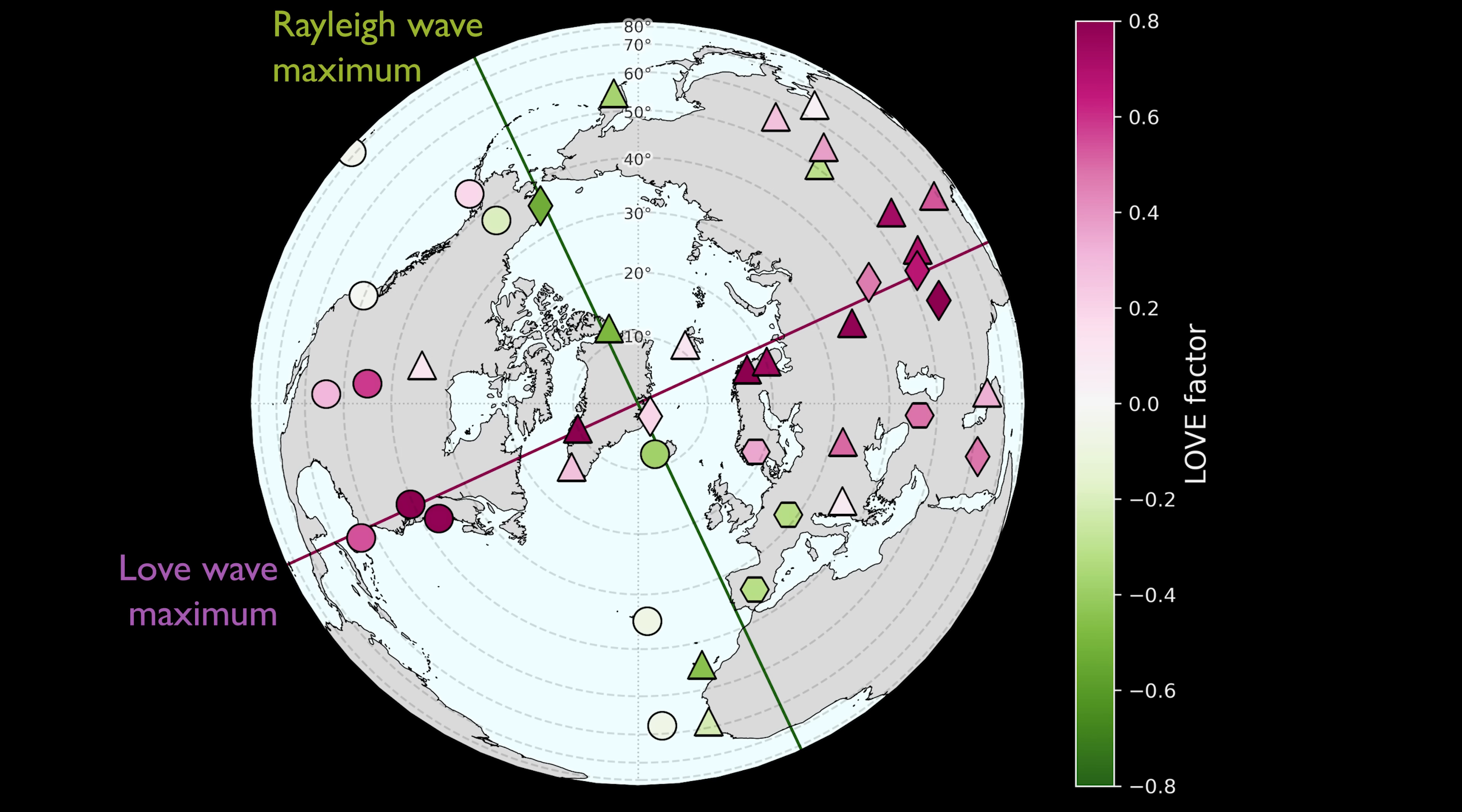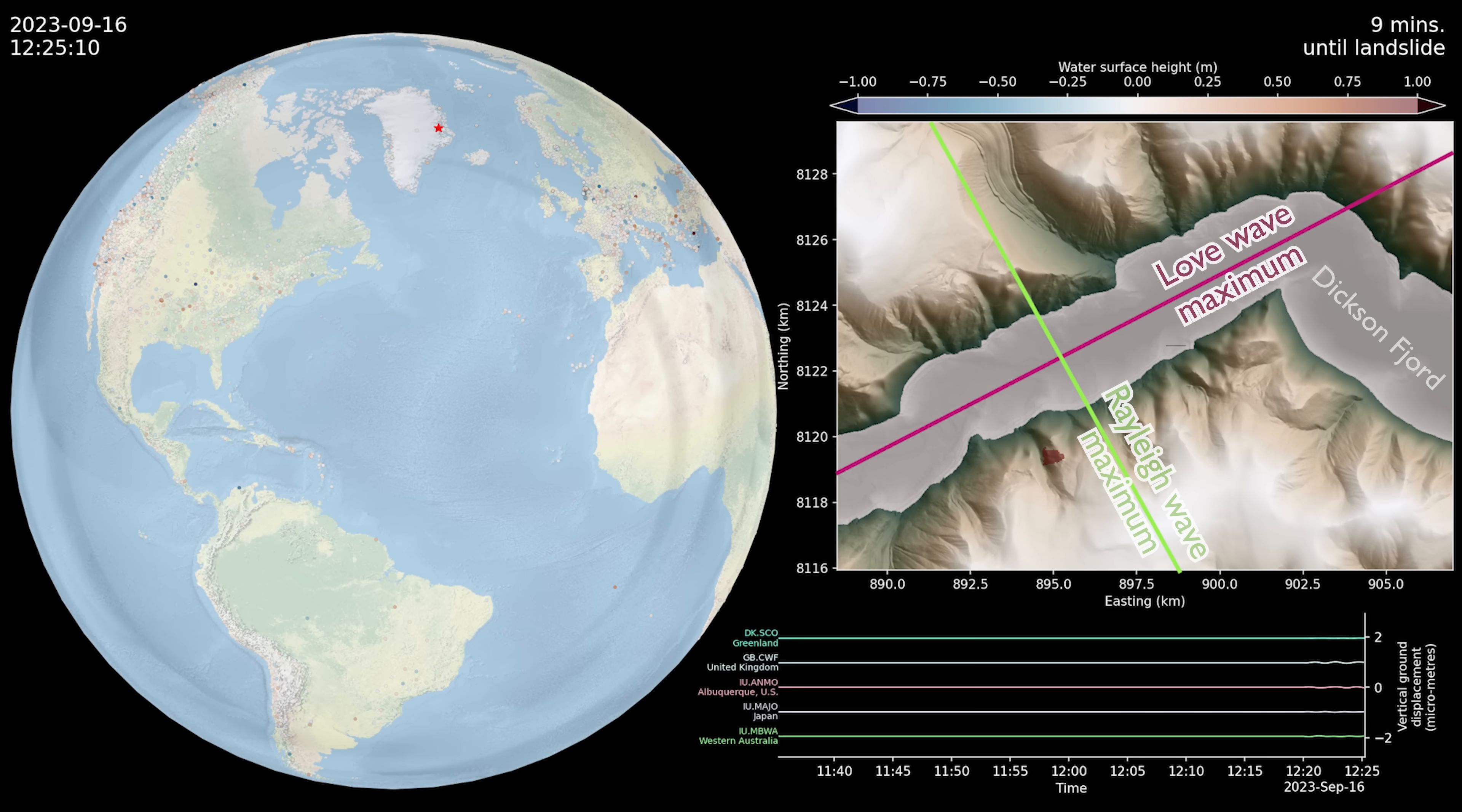We find the greatest love wave amplitudes in the southwest to northeast direction, while the greatest Rayleigh wave amplitudes are in the northwest to southeast direction. This can only be caused by a force oscillating back and forth at 90 degrees to the long axis of Dixon Fjord.